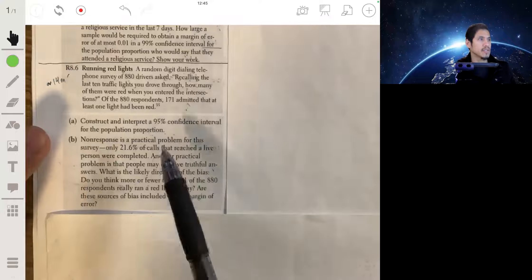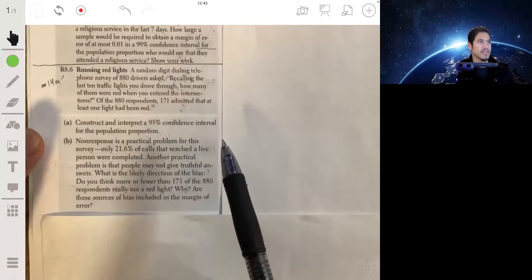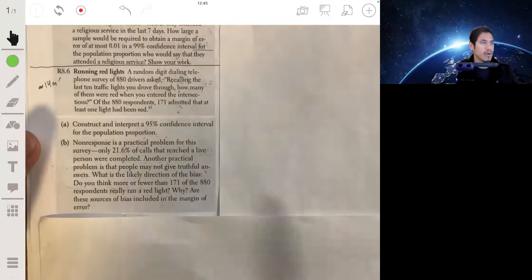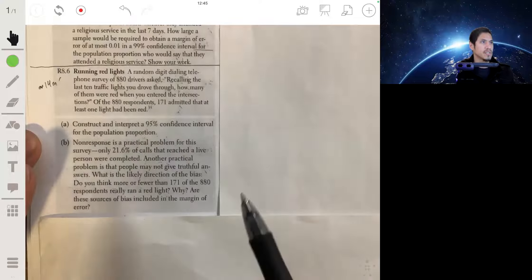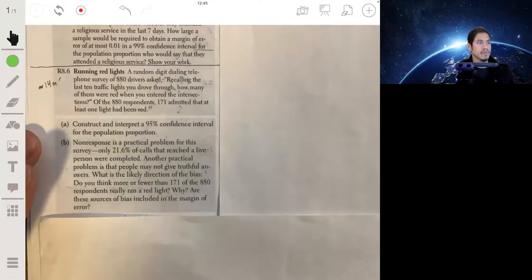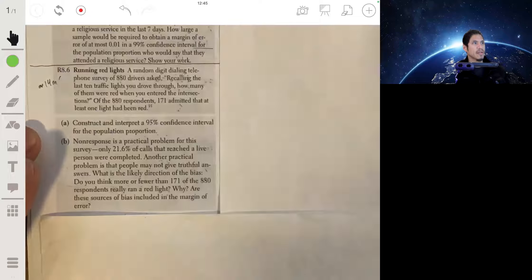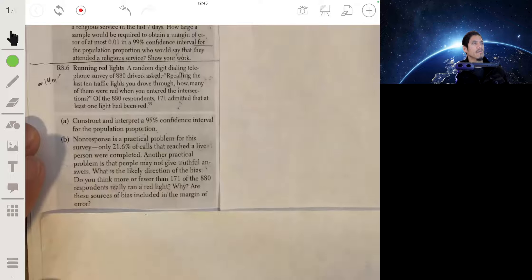So part A: construct and interpret a 95 percent confidence interval for the population proportion. We're going to break this up into our four-step process where we have State, Plan, Do, Conclude.